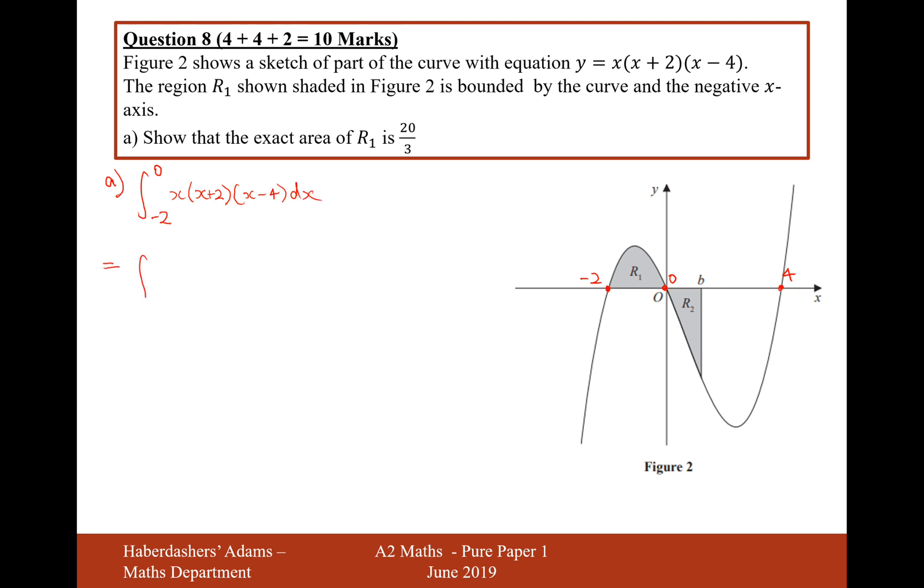We're going to expand the brackets. From minus 2 to 0, it's going to be x cubed minus 2x squared minus 8x dx. Let's now integrate. Increase the power by 1 divided by the new power. So 1 over 4 x to the 4 minus 2 over 3 x to the 3 minus 4x squared, evaluated between minus 2 and 0.